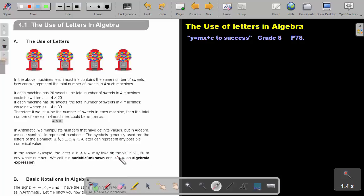Very important. 4 multiply n, you don't see an equal sign. It's just an expression and that's why we call it an algebraic expression.